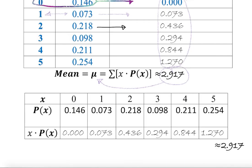As you can see, adding all of these values gives us the same 2.917. So it doesn't matter if it's given as vertical or horizontal.